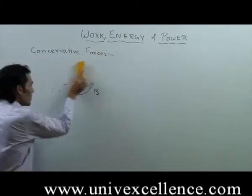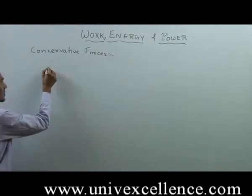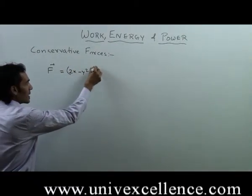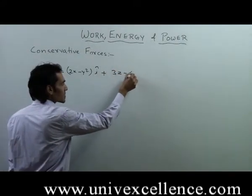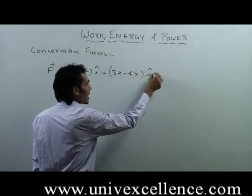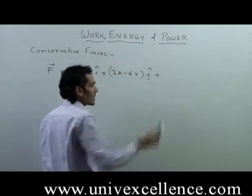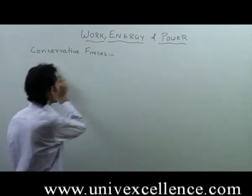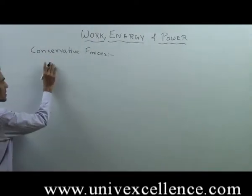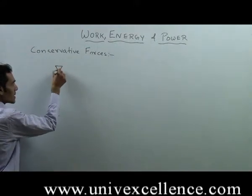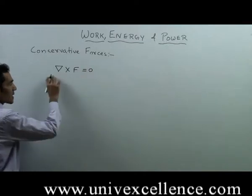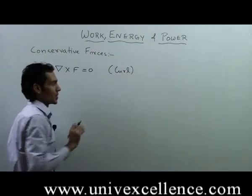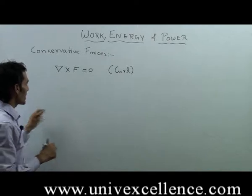So how do we find which force is conservative and which is non-conservative? If a general force is given, for example F equals (2x minus y squared) i-cap plus (3z minus 4x) j-cap, how do we find whether this force is conservative or not? For a conservative force, we have the relation that the curl of that force must be zero.